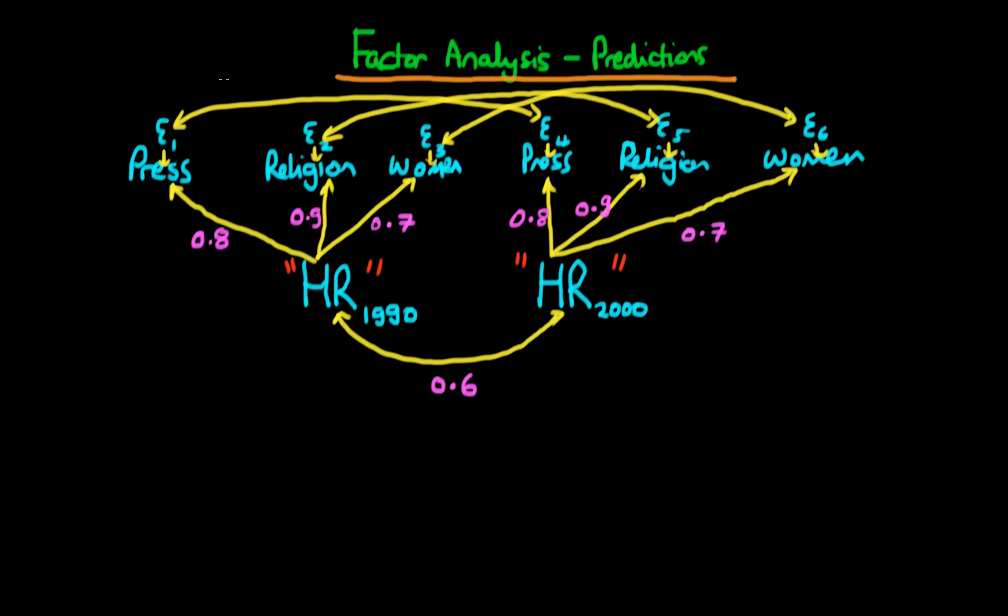And the covariances, even though I haven't written them down, I'm going to use 0.3 for the covariance of the error of press, as it's measured in 1990, with the error of press in 2000. It's going to be 0.2 for religion, and 0.3 for women's rights.